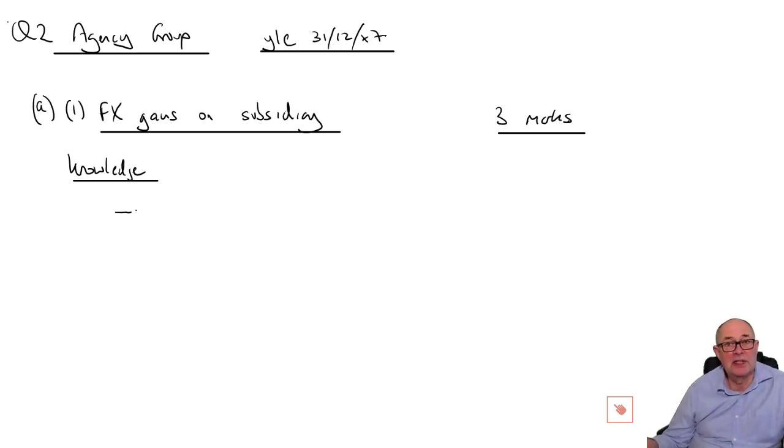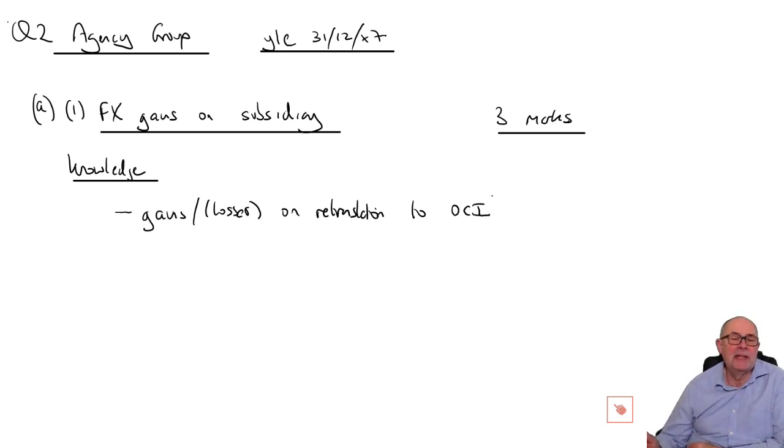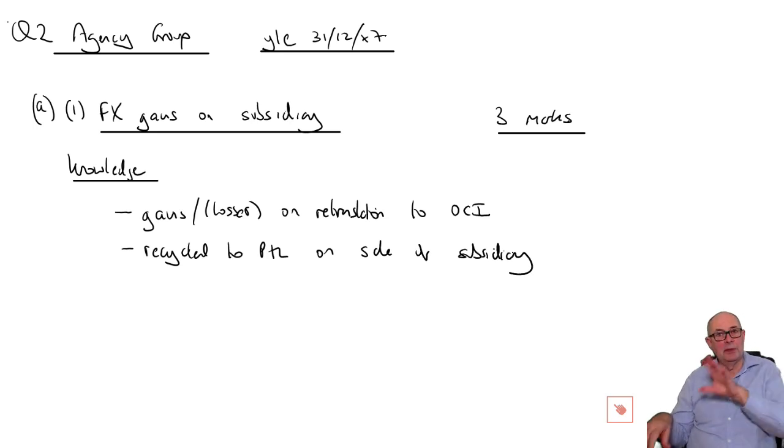So you know that FX gains on translating subsidiaries, net assets and goodwill go to reserves, not to the profit and loss account. Another way of saying reserves is of course OCI. So the main rule is that gains and losses on retranslation go to OCI or foreign exchange reserve.